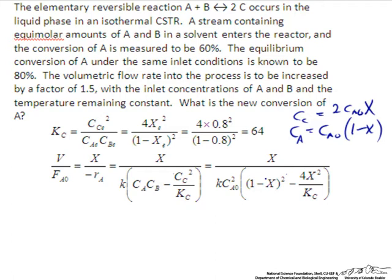Under the initial conditions, we know the value of the conversion is measured to be 60%, so we can plug in 0.6 for the conversion here and here. We know the value of KC, which is 64.